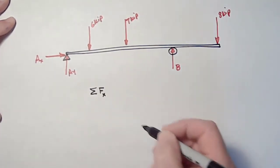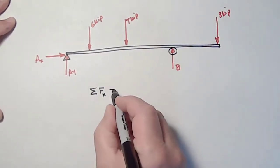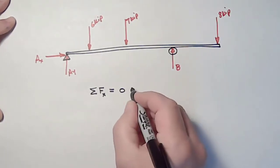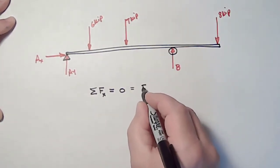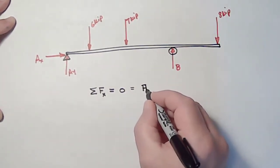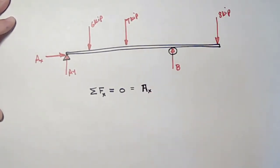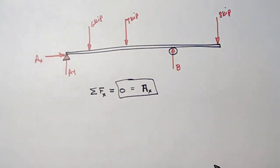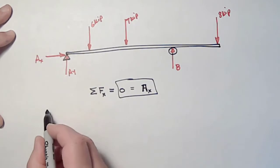So first of all, the sum of the forces in the horizontal direction equals zero and that equals AX. There is only one force in the horizontal direction and since there are no other applied forces, AX has to be zero.